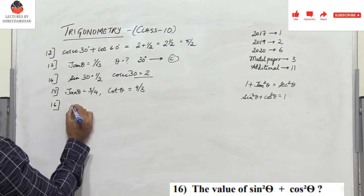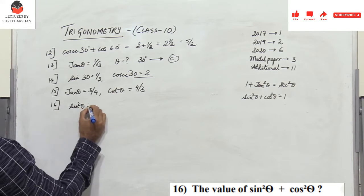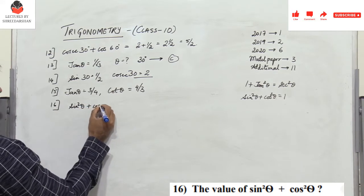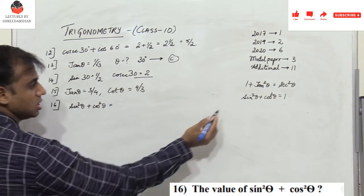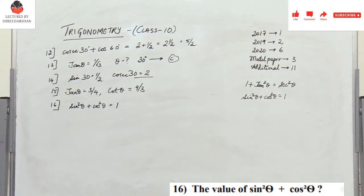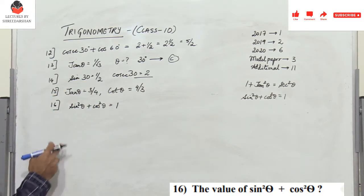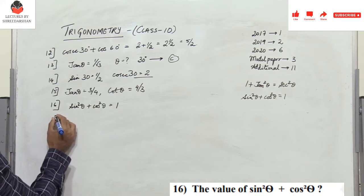Problem 16: what is sin²θ + cos²θ equal to? We already know sin²θ + cos²θ = 1, so the answer is 1.